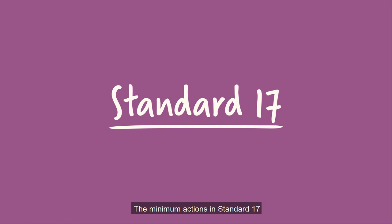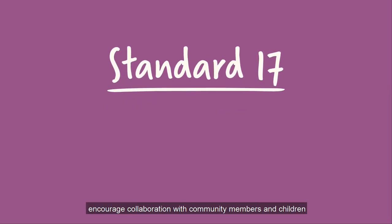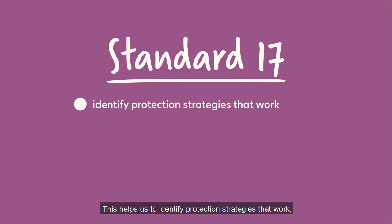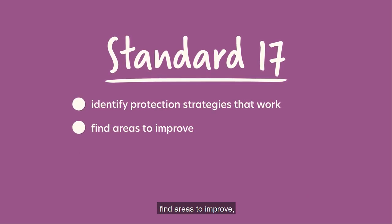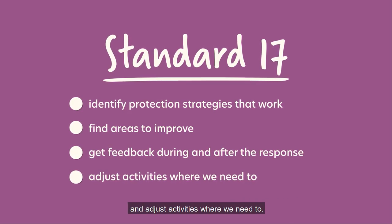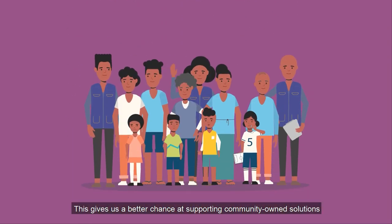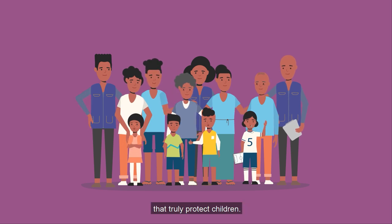The minimum actions in Standard 17 encourage collaboration with community members and children. This helps us to identify protection strategies that work, find areas to improve, get feedback during and after the response, and adjust activities where we need to. This gives us a better chance at supporting community-owned solutions that truly protect children.